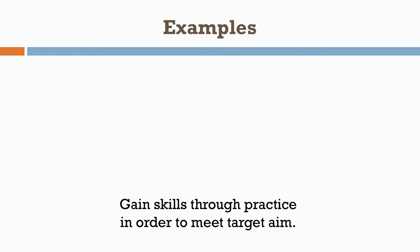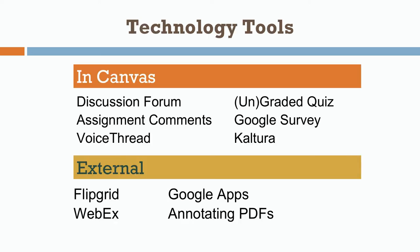As you're thinking about examples, you want students to do formative feedback so they gain skills through practice in order to meet the target aim. There are technology tools that can help you with this in Canvas. Those would be the discussion forum, the assignment comments that you can make in response to student work and that they can add to as they respond to you.